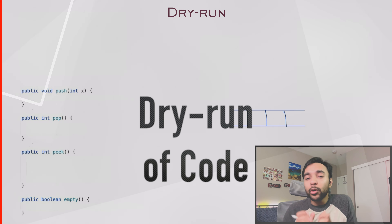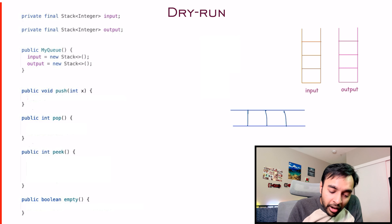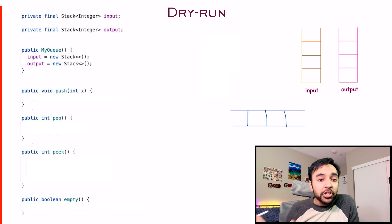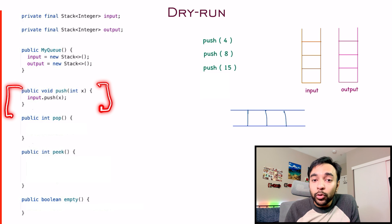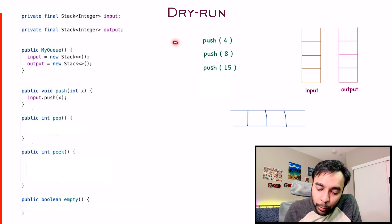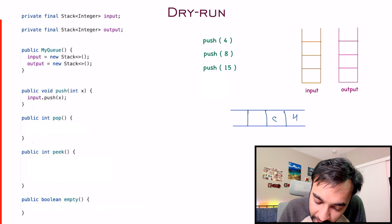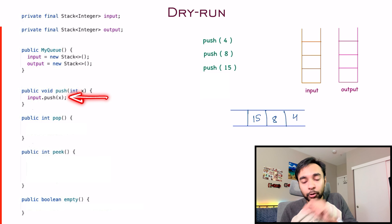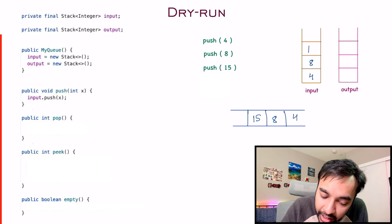Now let us quickly do a dry run of the code. On the left side of your screen you will have the complete code to implement this functionality, and on the right I have a queue just for reference. First of all, we create two stacks — the input stack and the output stack. These will come in handy whenever we do push and pop operations. Let us say I am calling push 4, push 8, and then push 15. In a queue, 4, 8, and 15 get pushed. For our stacks, you simply take the input stack and push each element — so they get pushed as 4, 8, and 15.